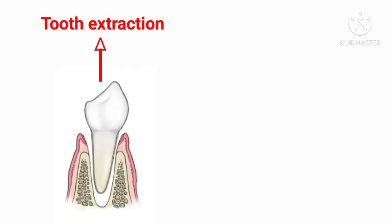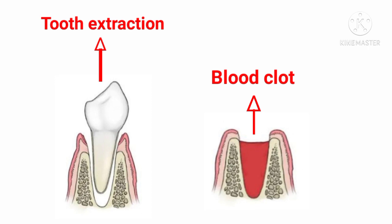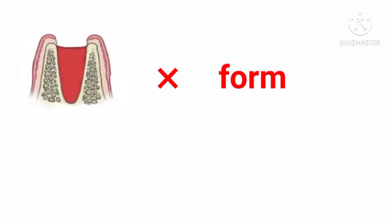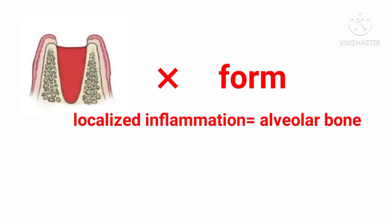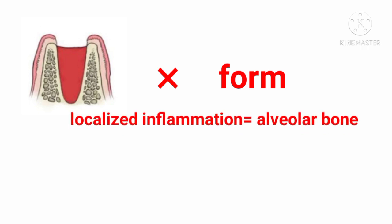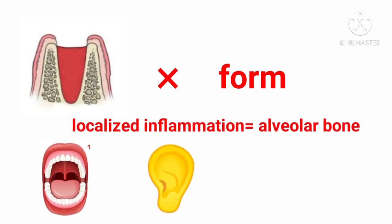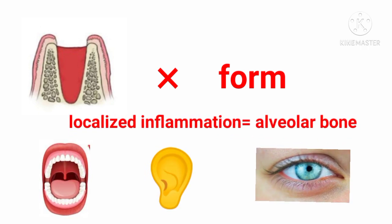After tooth extraction, a blood clot forms on the socket of the extracted teeth, mainly to reduce the blood loss due to extraction and also to prevent the alveolar bone from getting exposed to the oral environment. When this blood clot fails to form or is physically lost from the socket, alveolar bone gets exposed to the oral saliva, bacteria, and food debris. This results in localized inflammation of alveolar bone, leading to severe throbbing pain that radiates to the jaws, ears, and eyes of the affected side.